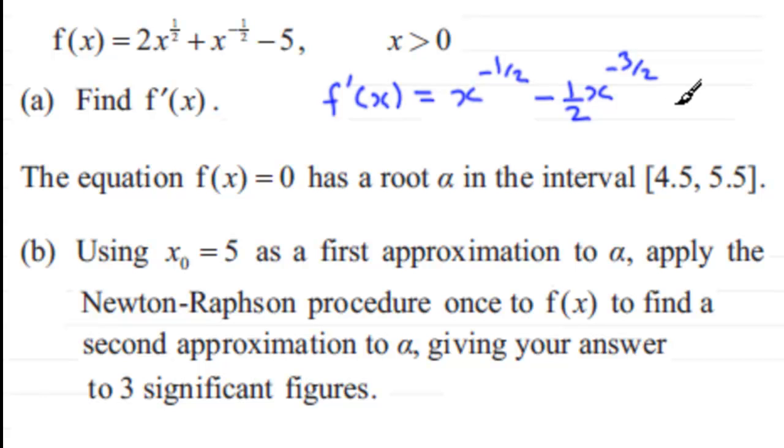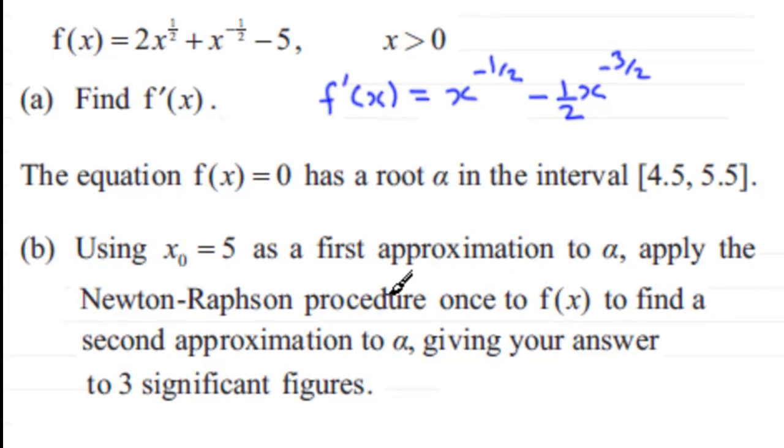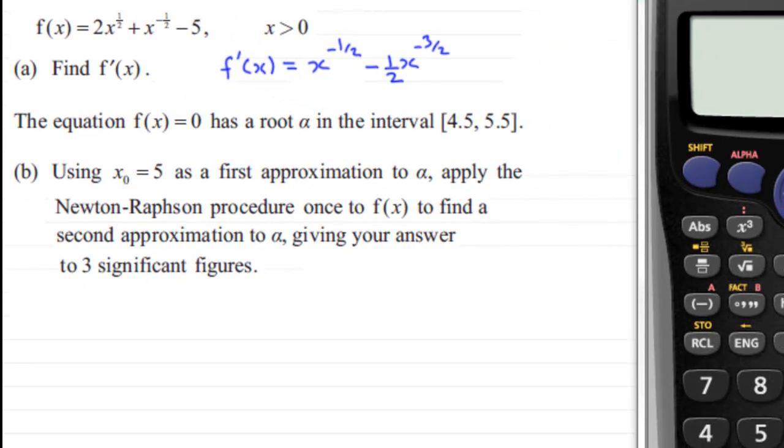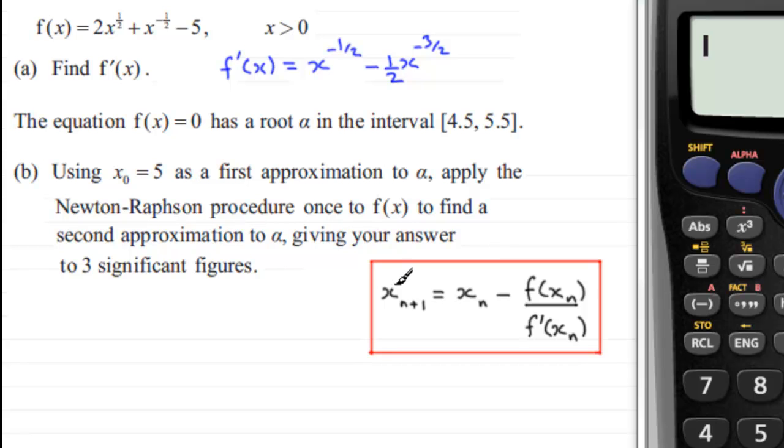Now to work out our approximation to our root alpha by using the Newton-Raphson procedure. You should be familiar with this, it's normally given in formula books, but here's the formula anyway: the next approximation is given by x_{n+1}, it's equal to x_n minus f(x_n) divided by f'(x_n).